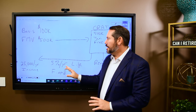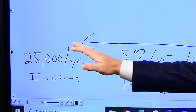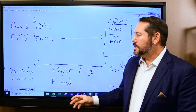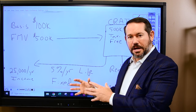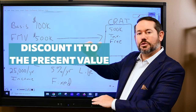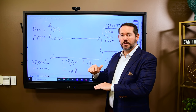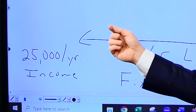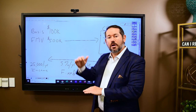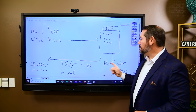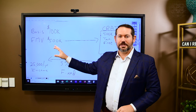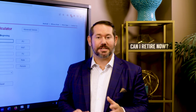Let me explain how that works at a high level. If we're going to receive $25,000 a year and you have a 15-year life expectancy, they take the sum total of that income over that period and discount it to present value — it's a time value of money calculation. When interest rates are higher, it's discounted to a greater extent, meaning the present value of the future income stream is smaller. That means the remainder balance is greater, and the greater the remainder balance, the higher your income tax deduction today.